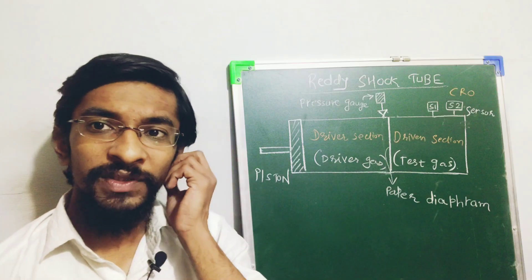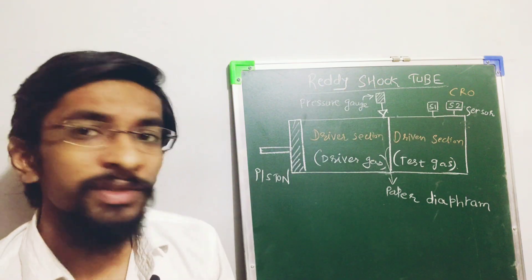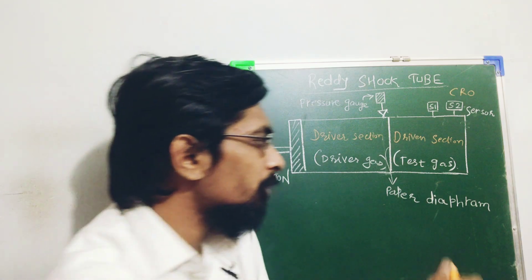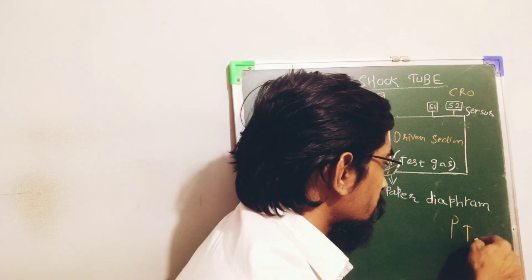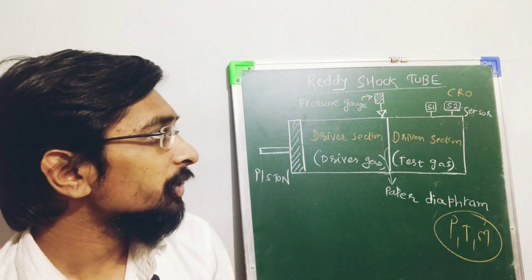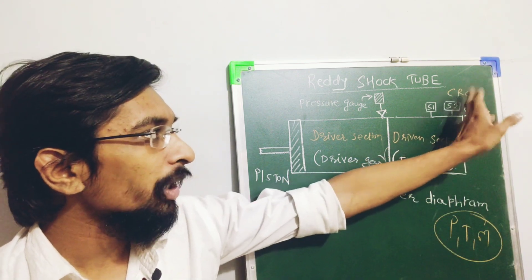So basically here in this ready shock tube, this is one instrument where we try to find the parameters like pressure, temperature, Mach number, etc. Here we have oscilloscope, the cathode ray oscilloscope.